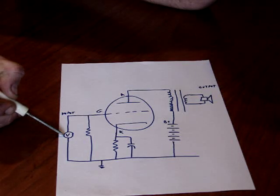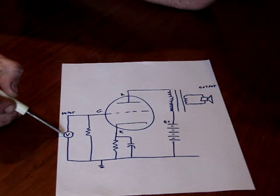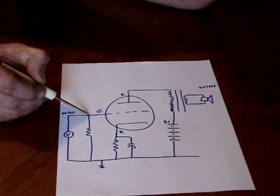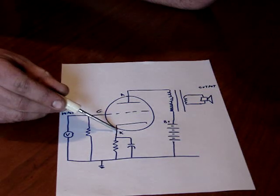This would be your input. It could be a microphone, a guitar, or even your CD player. This is a resistor that biases the grid, which I spoke about earlier, making it more negative than the cathode.